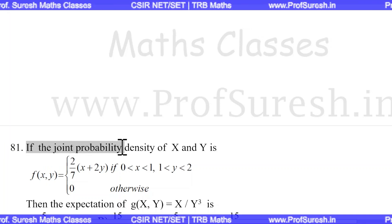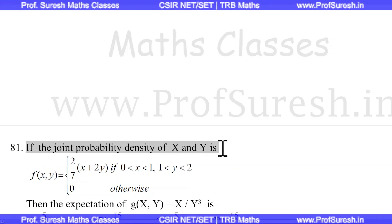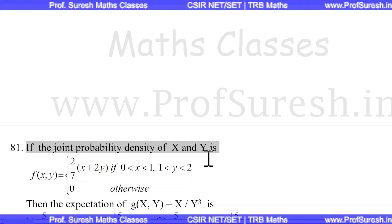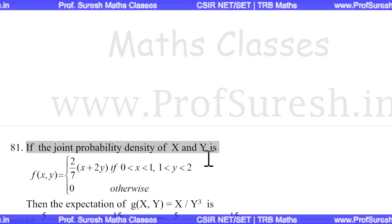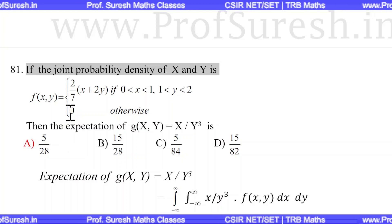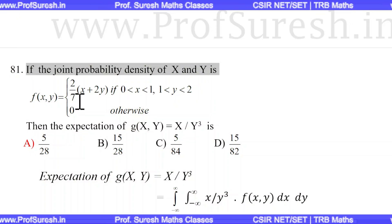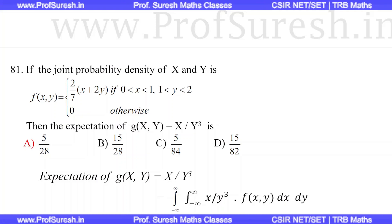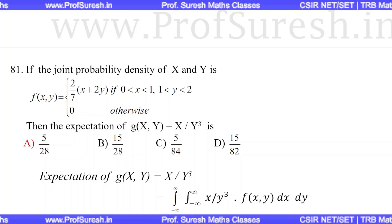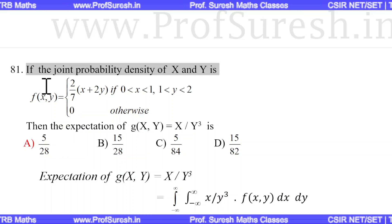If the joint probability density of x and y is given by f(x, y) = (2/7)(x + 2y), for 0 < x < 1 and 1 < y < 2, and 0 otherwise.